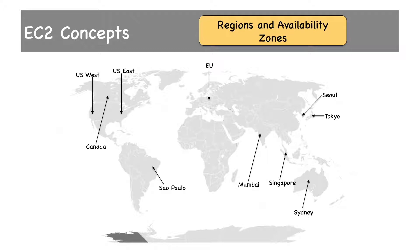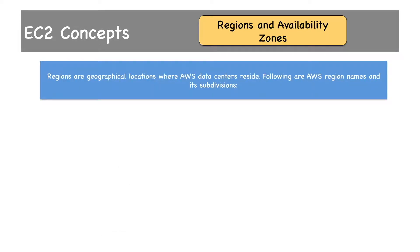Regions are geographically separate from each other. Each region comprises multiple data centers. These data centers are actually called Availability Zones. There are a total of 15 regions around the world. So regions are geographical locations where AWS data centers reside.